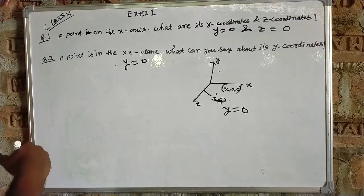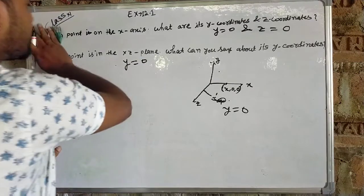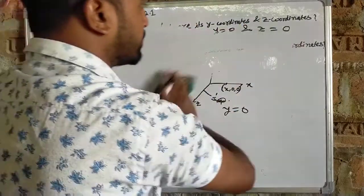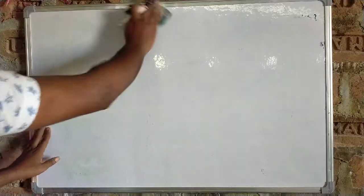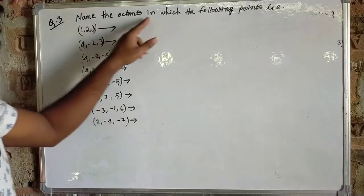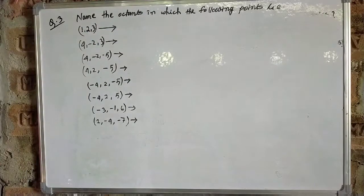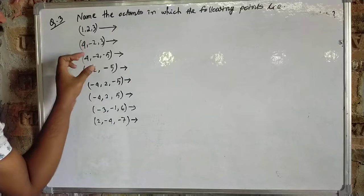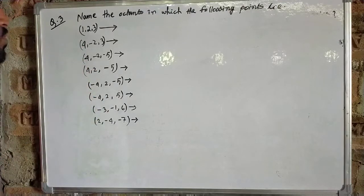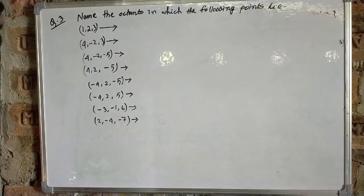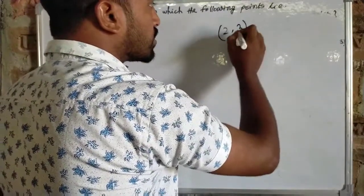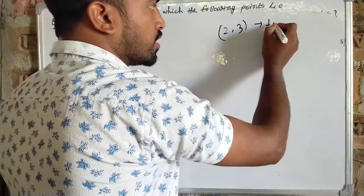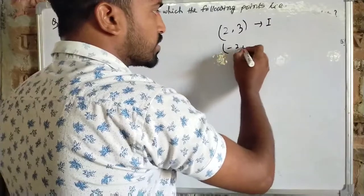Question number 3: Name the octants in which the following points lie. The first point has coordinates (2, 3), and the next point is minus 2, 3.